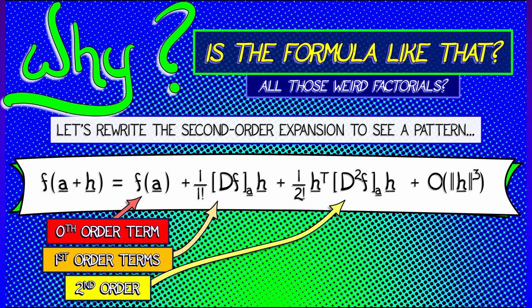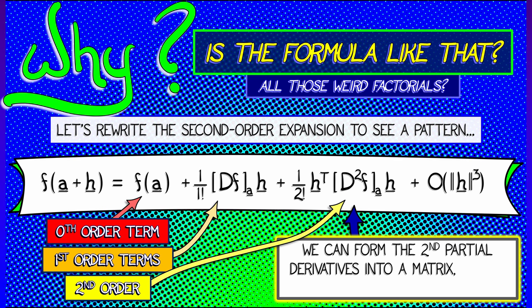packing them into a matrix, and then using that matrix as a quadratic form, multiplying by h transpose on the left, h on the right, and then dividing the whole thing by two factorial. That looks a lot like the sort of standard way of doing things.